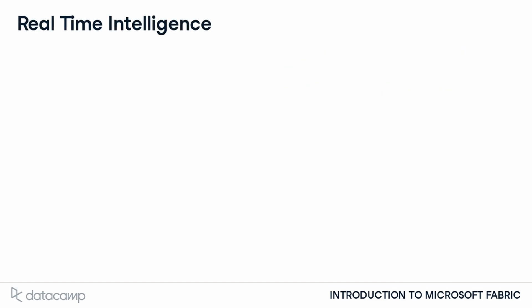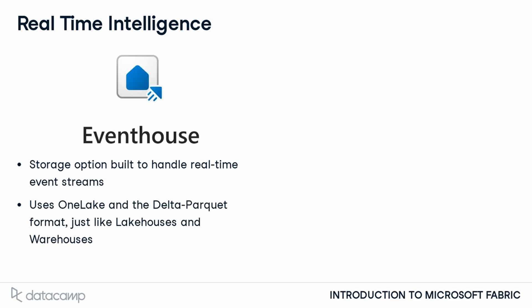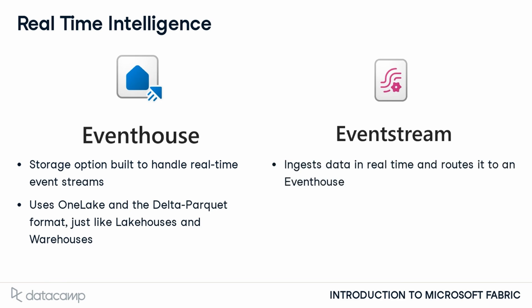The next experience is Real-Time Intelligence. This experience has a suite of tools built around ingesting, processing, analyzing, and monitoring events in real-time. It introduces a new data storage option: the event house. An event house is similar to a lake house or warehouse, but specifically designed to handle real-time data streams. Like other Fabric storage solutions, event houses use OneLake, meaning data in your event house can be accessed across other areas of Fabric. The Real-Time Intelligence experience also contains the Event Stream tool, which ingests real-time data, transforms it, and routes it to the appropriate storage option. You can think of it as the real-time equivalent to Dataflow — a tool where you define how to manipulate your data before sending it to its final destination.